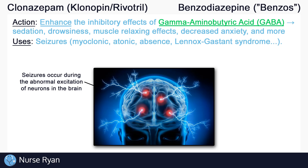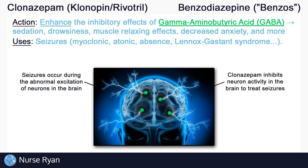Seizures occur during the abnormal excitation of neurons in the brain. So it makes sense that clonazepam, a drug that inhibits neuron activity, works to treat those excitable neurons by slowing down the electrical activity of the brain.